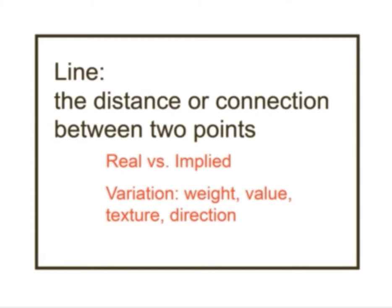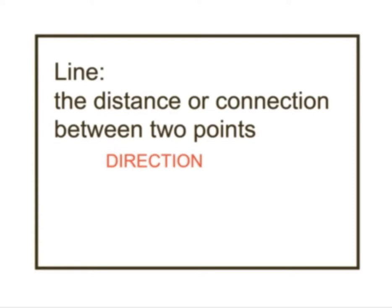You can create variation in line by changing the weight, the value, the texture, or the direction. Weight is the thickness or thinness of the line. Value is the lightness or darkness — how close to black or white. Texture has to do with the edge of the line, how rough or smooth, fuzzy or soft it is. Direction — which we'll deal with the most in this unit — is the physical direction the line takes: vertical, horizontal, diagonal, or curvilinear. Understanding how to control direction is one of the most crucial elements for composition and creating a definite focal point.